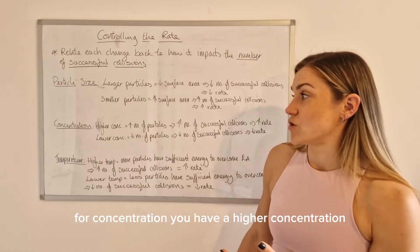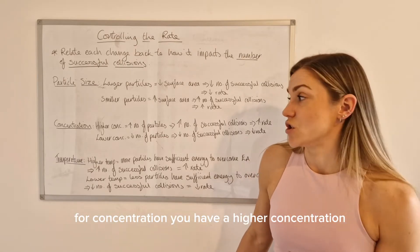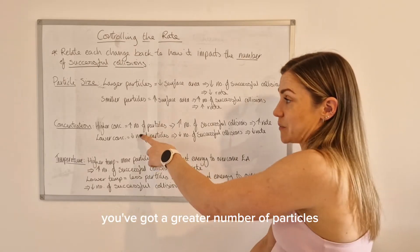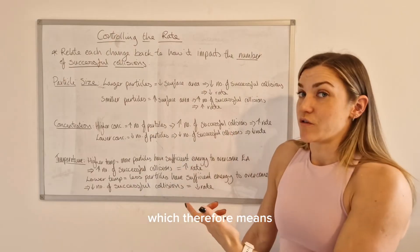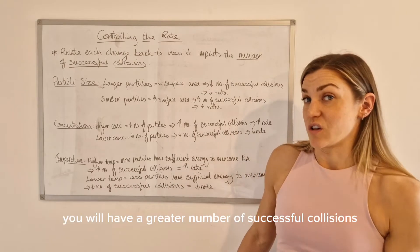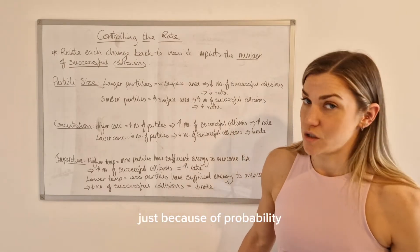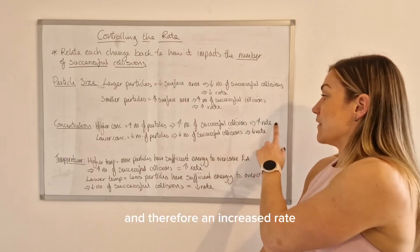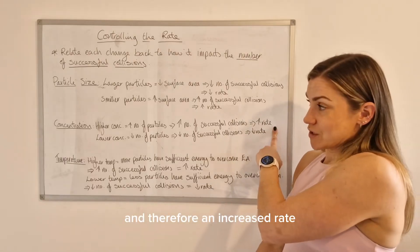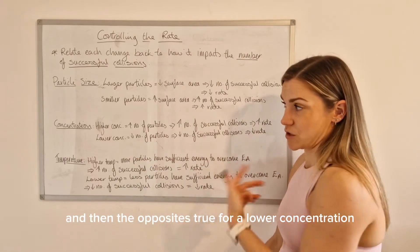For concentration, if you have a higher concentration you've got a greater number of particles, which means you'll have a greater number of successful collisions just because of probability, and therefore an increased rate. The opposite is true for a lower concentration.